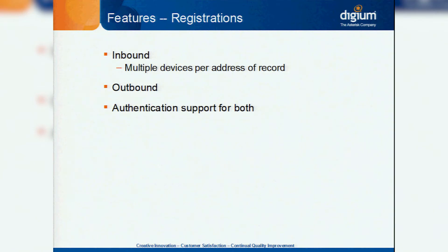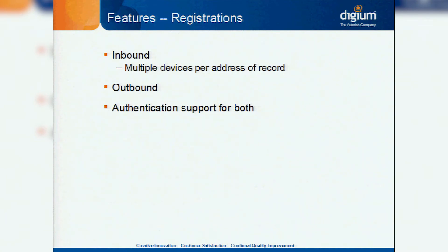Registrations: outbound registrations for SIP are pretty much the same as chan_sip itself, just configured differently — we have an explicit section for each outgoing registration, and it also does authentication. One of the cool new things for inbound registrations is multiple devices per address of record. In chan_sip, if you register to a peer and then register something else five seconds later, the old registration gets replaced. That doesn't happen anymore in the new PJSIP code. There's specific configuration that lets you control how many maximum contacts to allow on the AOR, and you can also bring it back to the old SIP behavior where a new registration replaces the old one.